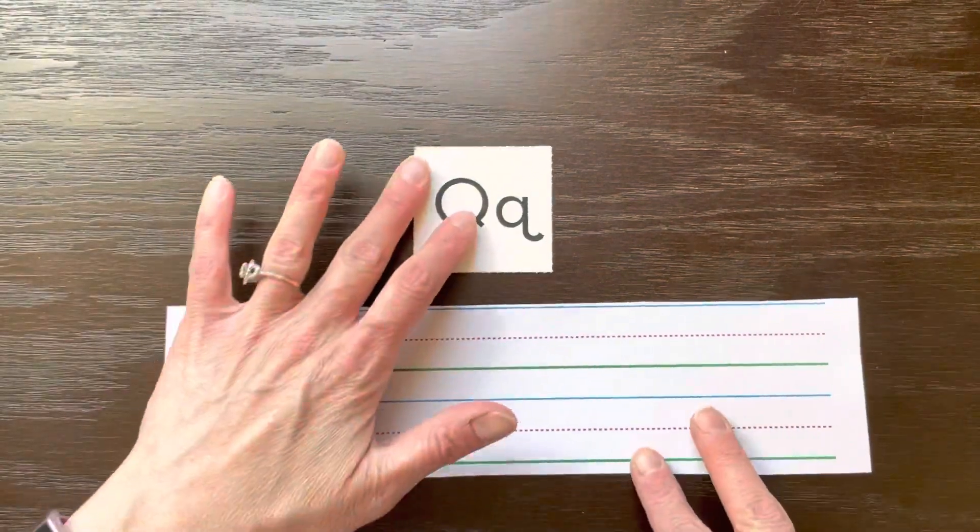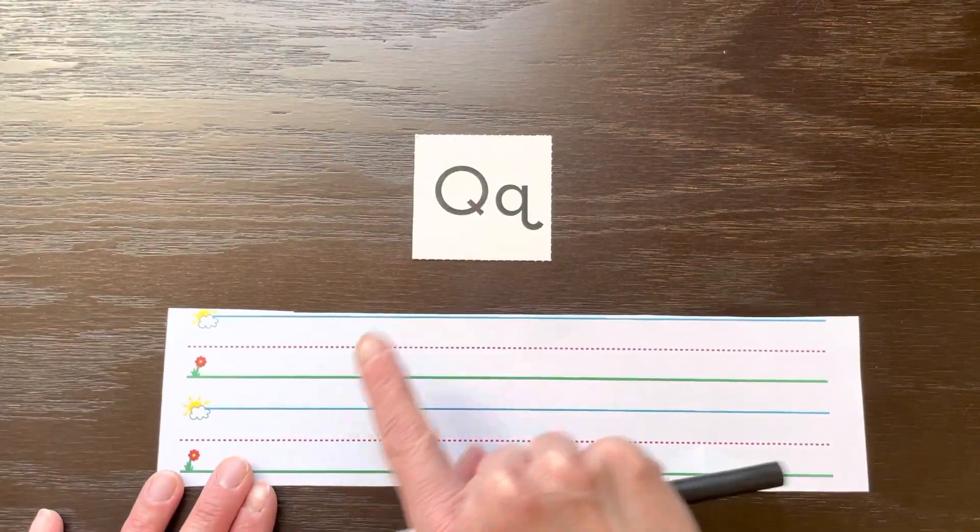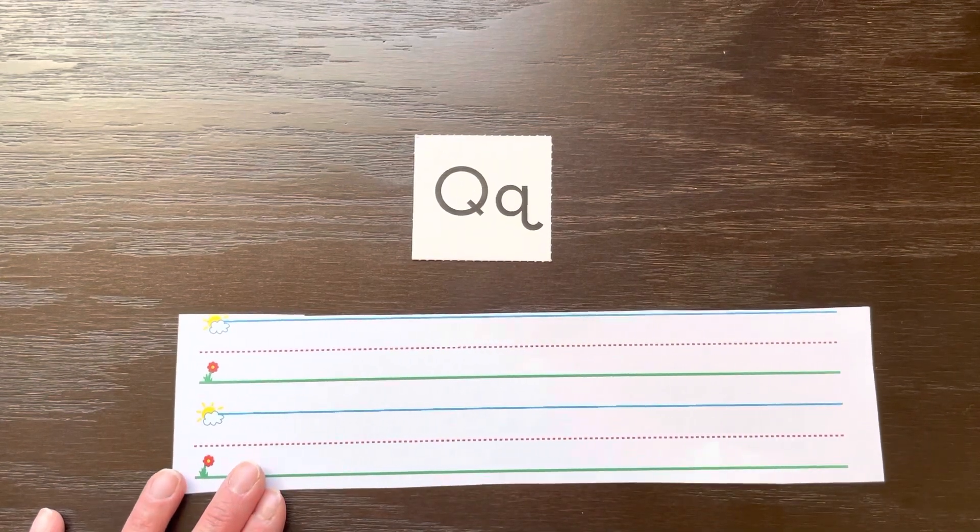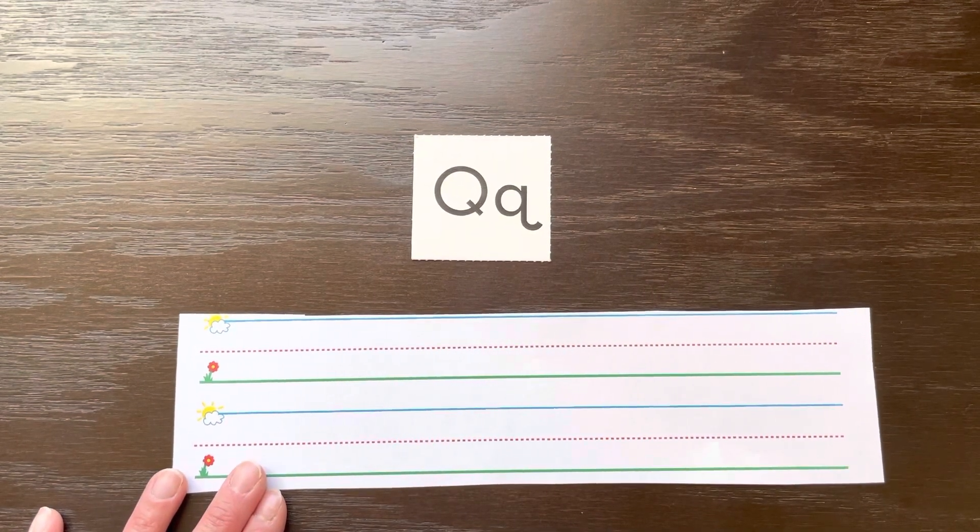Alright, let's learn how to write the letter Q. Capital Q, like all capital letters, starts at the top. And if you look closely, you should see another letter that we use to help us make the letter Q, and that is an O.